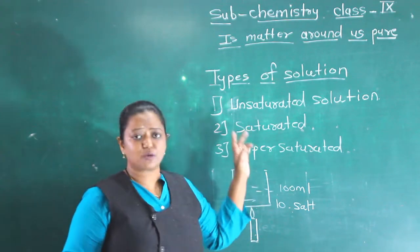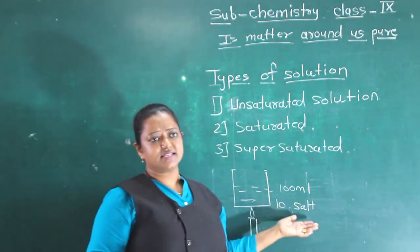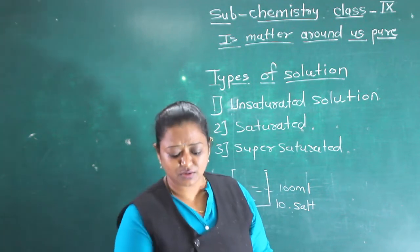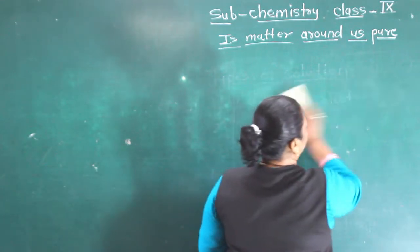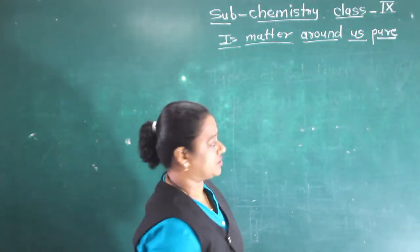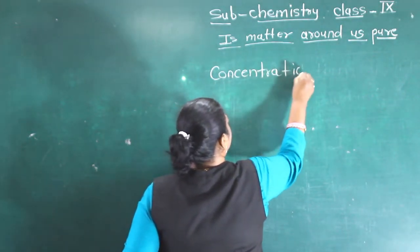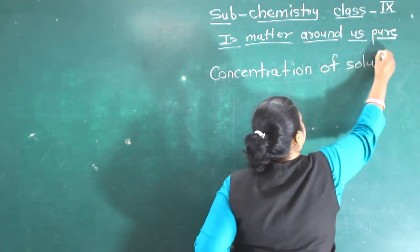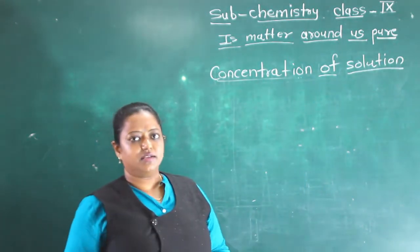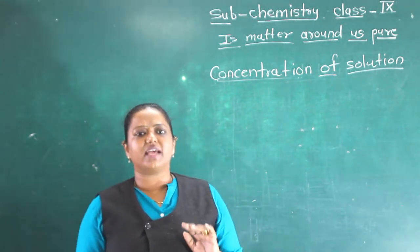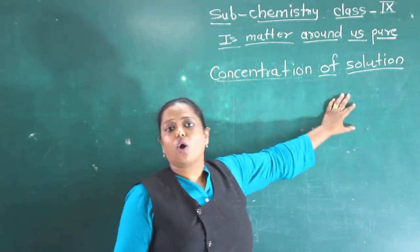So the concept of types of solution is clear: first is unsaturated solution, second is saturated solution, and third is supersaturated solution. Now we will go ahead for the concentration of solution. What is the concept of concentration of solution? Again I will give one example and through that example I will try to explain the concept of concentration of solution.